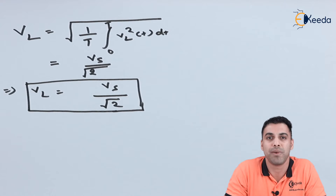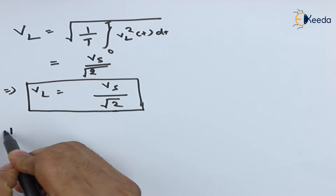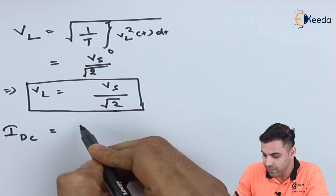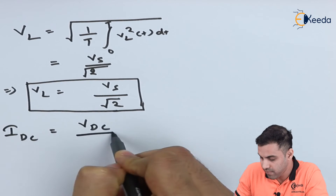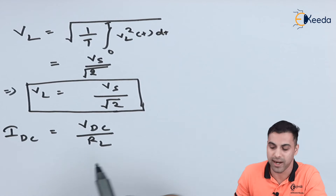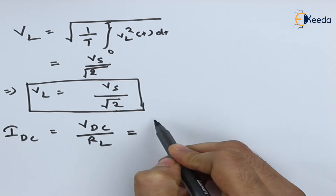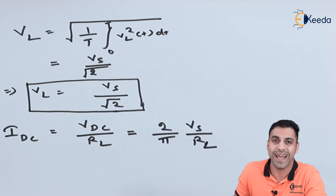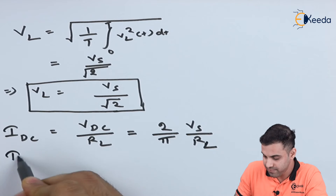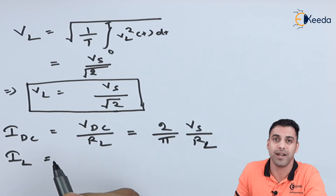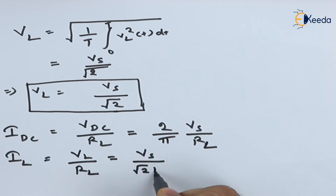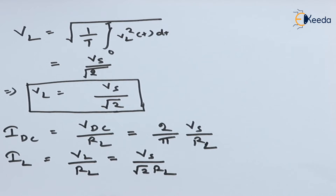Let IDC be the value of the DC current, which equals VDC divided by RL, which becomes 2 over pi times Vs divided by RL. The RMS load current becomes Vs divided by root 2 times RL. If we calculate the form factor — which is the ratio of the RMS value of the load voltage to the DC voltage — this becomes 1.11. The form factor of full wave rectification is equal to 1.11.